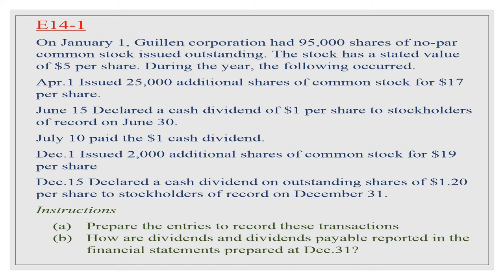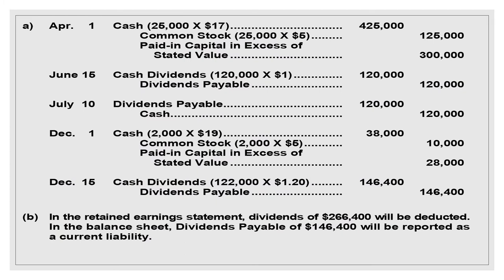For cash dividends, we use the number of outstanding shares. There are three key dates: the date of declaration — we have a journal entry; the date of record — there is no entry; and the date of payment — we have an entry.